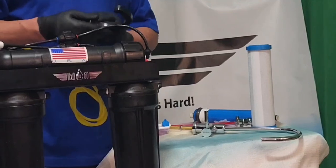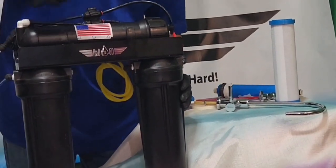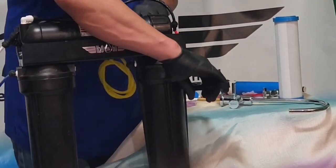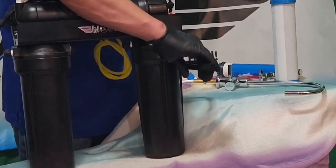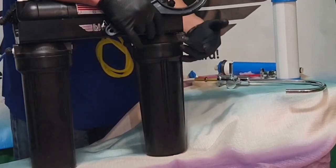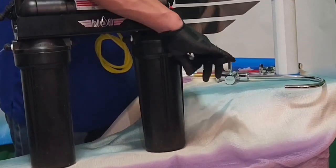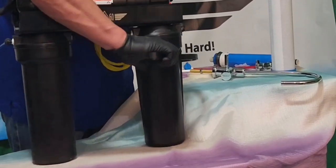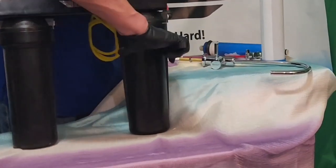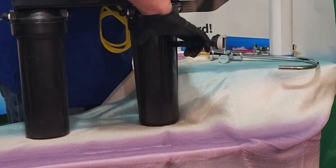which is unscrewing the canisters. What you want to do is turn it not righty-tighty, lefty-loosey, the opposite, because you're unscrewing the base and not the top. So it would go like this. This is how it unscrews.